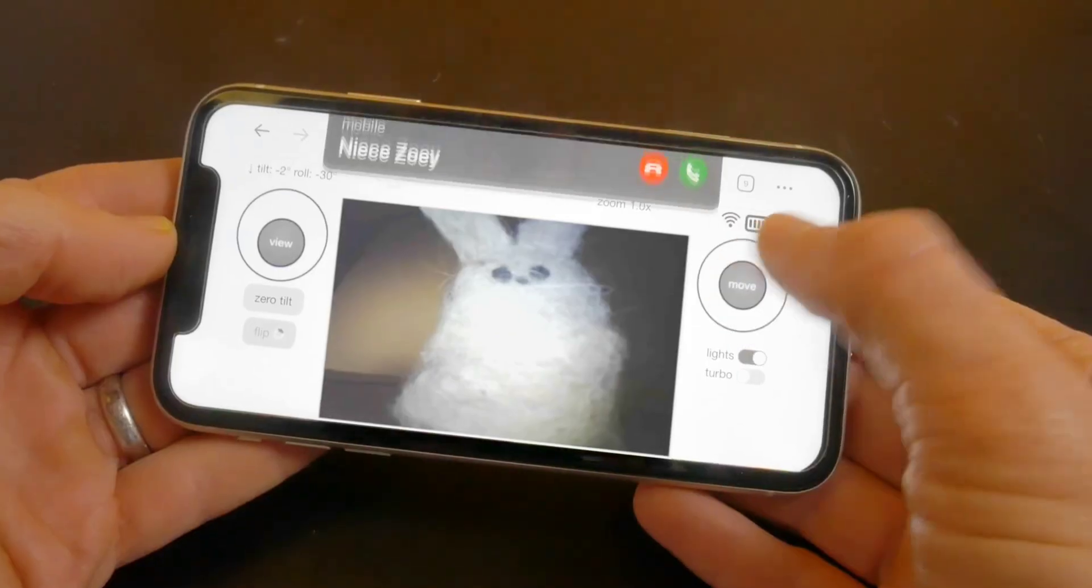Doing so will take you to a web page where you can view a live feed from the onboard camera and control the robot via two on-screen joysticks. No apps or downloads are required.